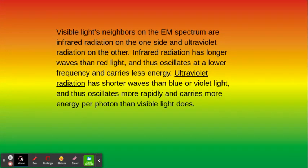Visible light's neighbors on the EM spectrum are infrared radiation on one side and ultraviolet radiation on the other.